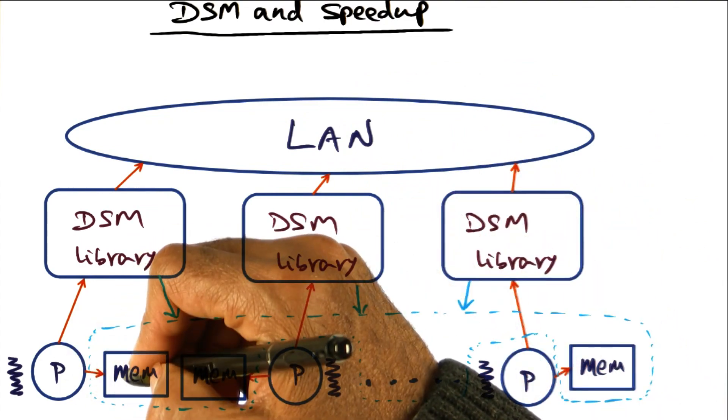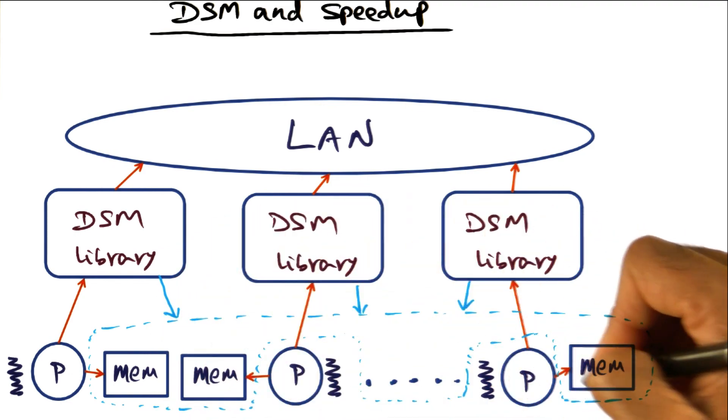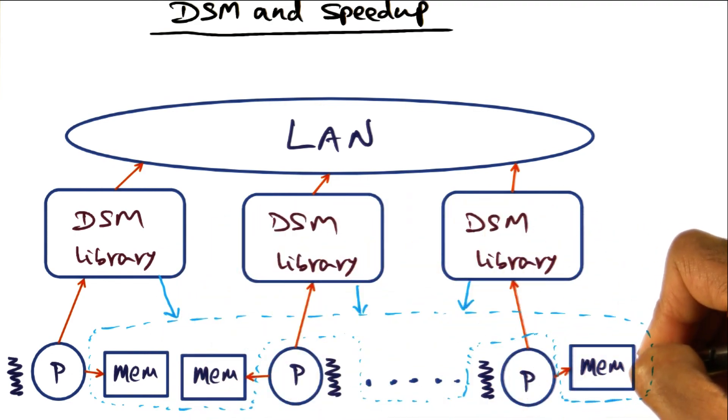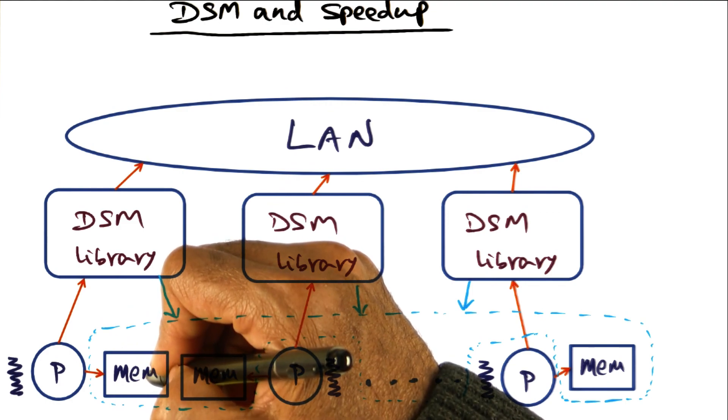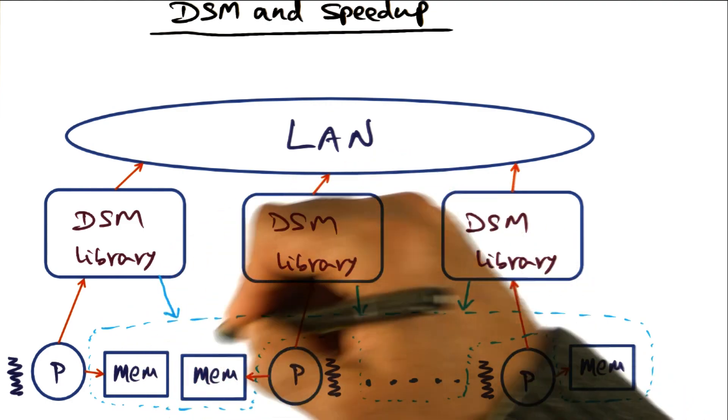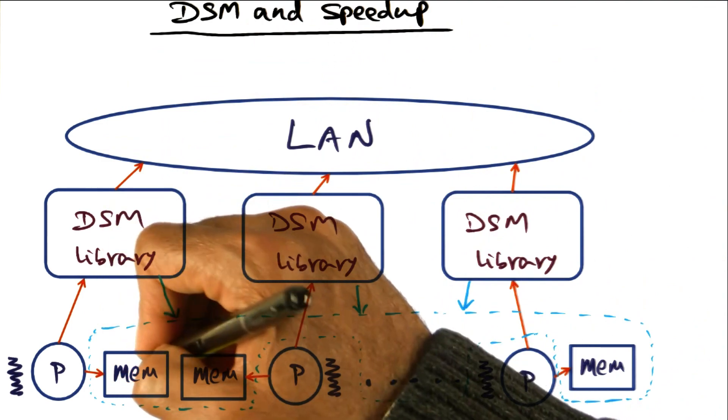You think you're executing code accessing a pointer, but that pointer happens to be pointing to memory that's in a remote processor. So that implicit access to a data structure pointed to by a pointer in your program can result in a network communication across the network fetching something from here into your local memory.